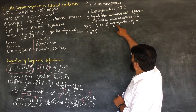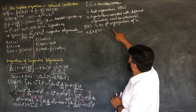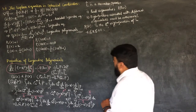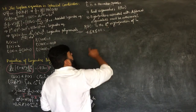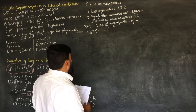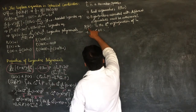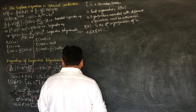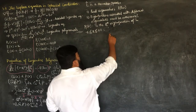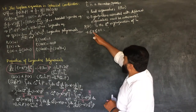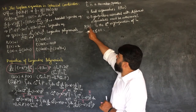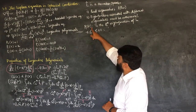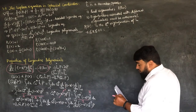We can expand any function in terms of these polynomials, just as we expand any vector in terms of unit vectors. We now need to prove that any two of these polynomials will be orthogonal to each other, and we must also normalize them.